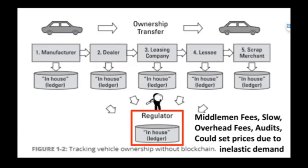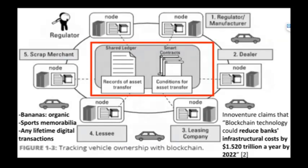With the blockchain system, the entire lifecycle is included in each node. It uses shared ledgers and smart contracts to ensure the system works and the lifetime is tracked. Instead of cars, we could track whether bananas are organic, whether sports memorabilia is fake or real, and any digital transactions. Using blockchain, it's estimated they can reduce infrastructure costs by $1.5 trillion per year by 2022.